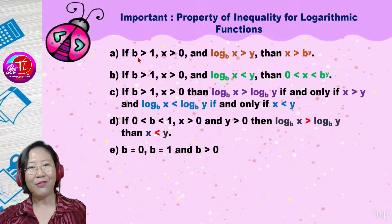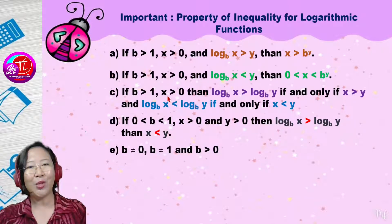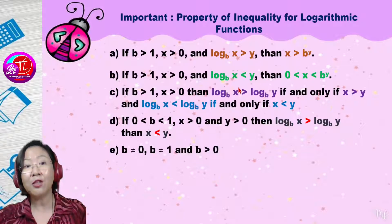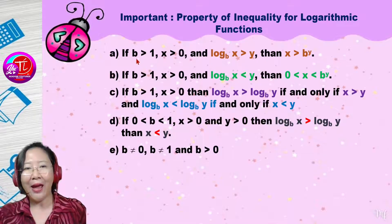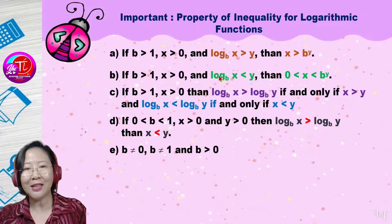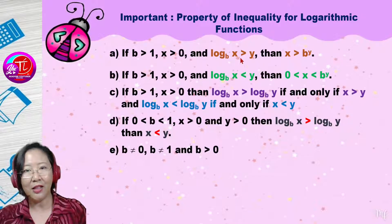For the first property, if the base b is bigger than one and x is bigger than zero — and notice that x bigger than zero applies to almost every property, so you really need to take note of that — when b is bigger than one and you have one side of the log, for example log base b of x bigger than y, then the inequality becomes x bigger than b to the power of y. The inequality symbol follows.